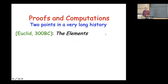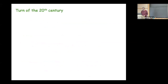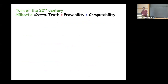One very old point: Euclid's Elements. You can look at it two ways — as a collection of theorems in plane geometry deducible from five simple axioms, but at the same time the proofs are all algorithms and constructions. They tell you how to prove anything by constructing it with a straightedge and compass. These are the two allowed operations, and the verification is plain to the eye.